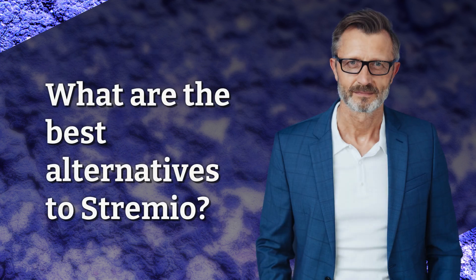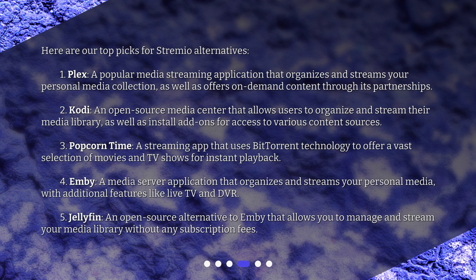What are the best alternatives to Streamio? Here are our top picks: 1. Plex — a popular media streaming application that organizes and streams your personal media collection, as well as offers on-demand content through its partnerships. 2. Kodi — an open-source media center that allows users to organize and stream their media library, as well as install add-ons for access to various content sources. 3. Popcorn Time — a streaming app that uses BitTorrent technology to offer a vast selection of movies and TV shows for instant playback.